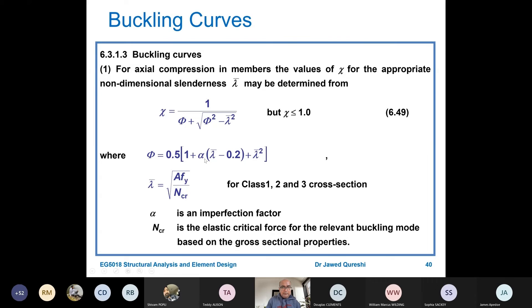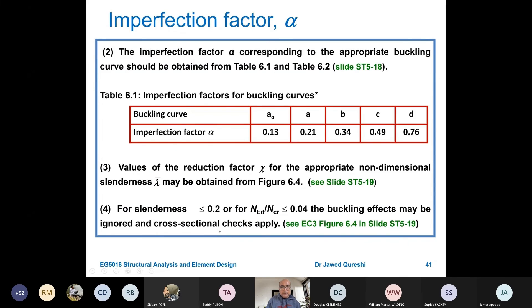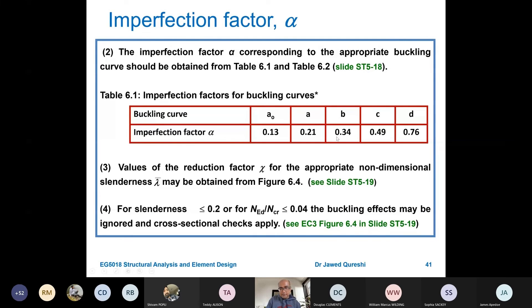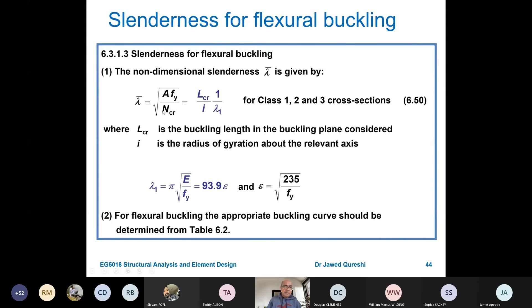The procedure is the same formula for chi and phi, and lambda equals this value. But I gave you a modified formula earlier. Where do we get alpha? For alpha, we go to table 6.2, where we get H over B values from section tables. Then we see where buckling is happening and choose a curve. Then we come back here. For example, if the curve is B, the value is 0.34. I'll tell you in a minute how we get these values. Lambda, as I mentioned, is LCR over IZ times 1 over lambda 1, where lambda 1 equals 93.9 epsilon, where epsilon is 235 over Fy. I is radius of gyration about relevant axis. Most of the time, we'll be considering minor axis because this is where buckling is going to happen.